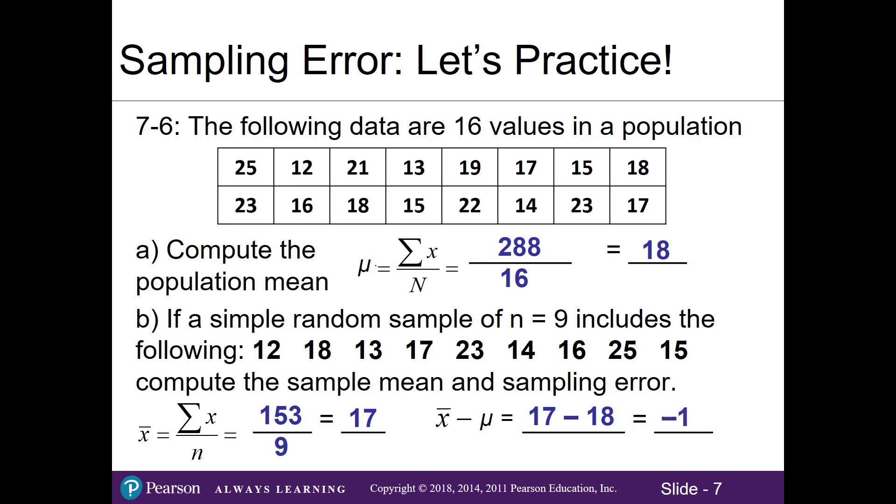Now imagine if I go back and I pick a different sample with some combination of nine numbers and I run it again. I will likely get a different sample mean and in turn get a different sampling error, and I can repeat this over and over.